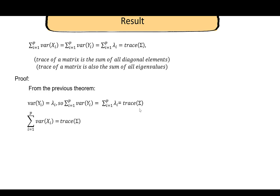The sum of variances of x_i equals the trace of sigma because the diagonal elements of the covariance matrix sigma are exactly the variances of x_i. So summing the diagonal — the trace — gives the sum of variances. From these two parts, the total variance of x variables equals the total variance of y variables. Result proved.